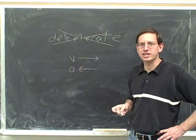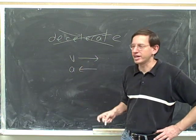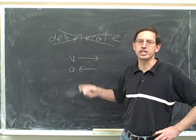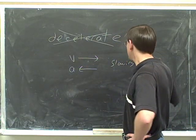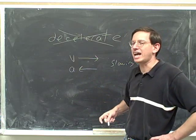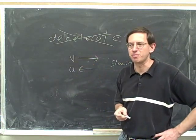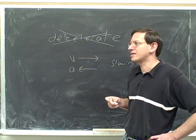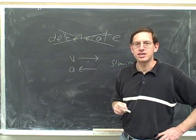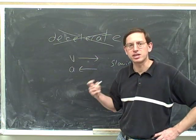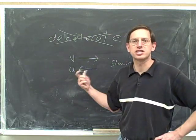So, is this object accelerating? In physics, we would say that this is accelerating, or at least we would say it has an acceleration. Even though this object is slowing down, in physics we would say that it has an acceleration — it just has an acceleration that's opposite to the velocity. In physics, we say that something has an acceleration if it's speeding up or slowing down.